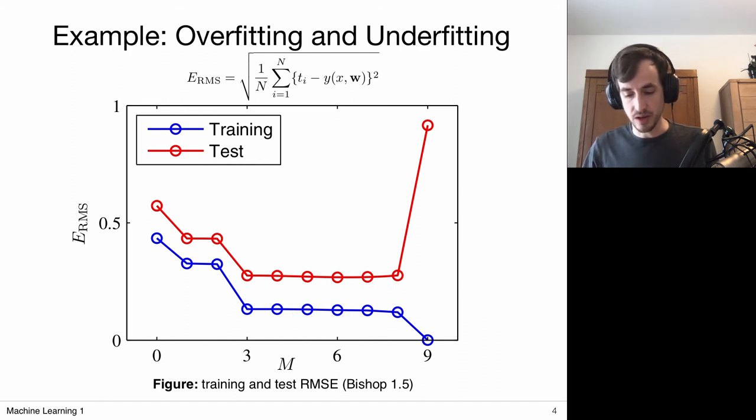And it decreases in this region only a little bit, slightly. But then we go to the M=9 case. Then my model is flexible enough to really fit precisely to the data and my error drops completely to 0. Now, if we were to have an independent test set, so this wasn't part of the training procedure, I could test how well this model performs on this set.